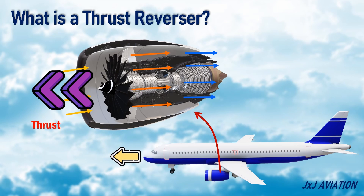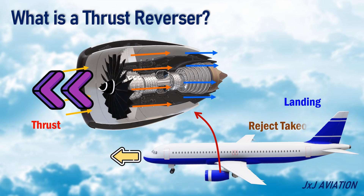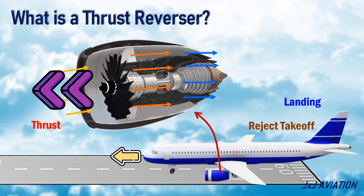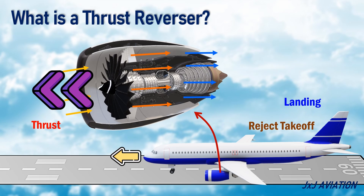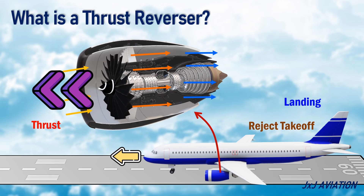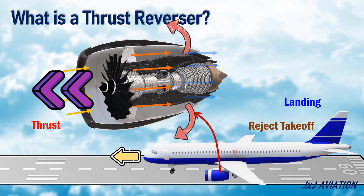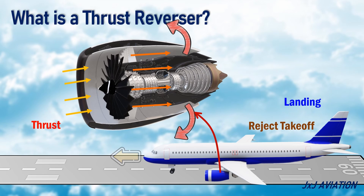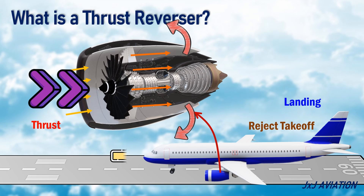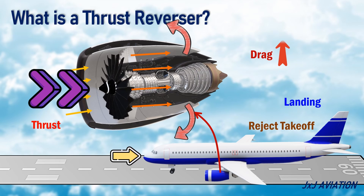However, during landing, or in case of a rejected takeoff, to ensure the aircraft stops safely on the runway, the thrust reversers are used. When the thrust reversers are deployed, the air is deflected forward instead of backward. So the thrust acts in the reverse direction, or in other words, increases the drag on the aircraft.